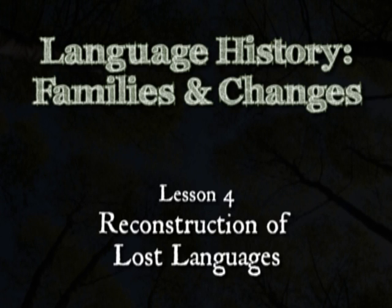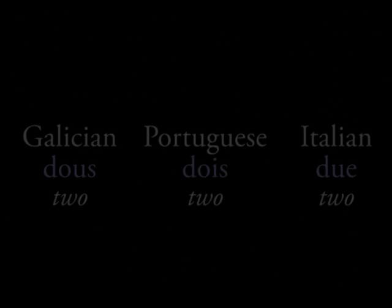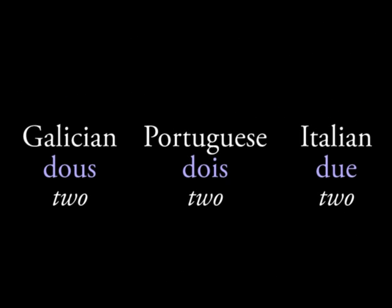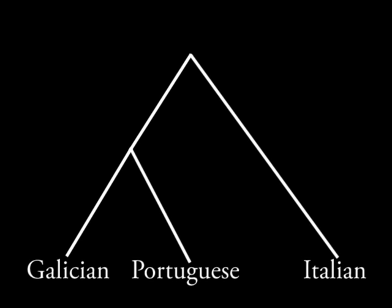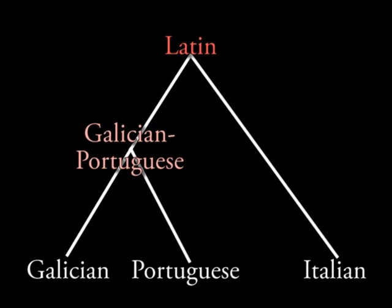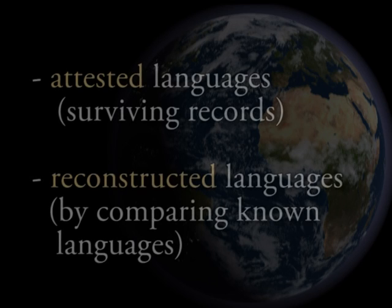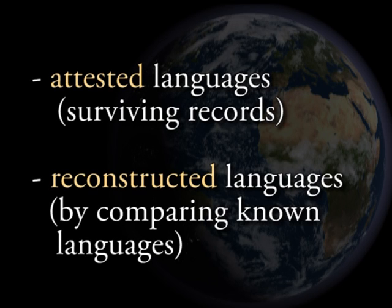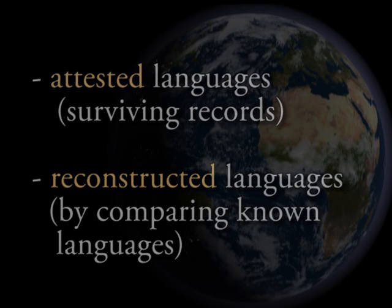Hello and welcome to the fourth lesson in NativeLang.com's introduction to historical linguistics and language change. Last time we looked at some basic words in three Romance languages and determined how they were related to each other. We filled out their family tree and saw that they had a relationship dependent on a common ancestor that was an actual language spoken in the past. We also determined that if we didn't have attested data for that language, we'd have to reconstruct it. In this lesson we're going to do some of those basic reconstructions to determine the shape of an ancestral language that isn't attested — in other words, we have no written records of it.